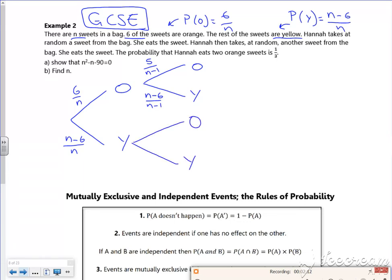So if I took a yellow, it was N minus six. But if I take one of those and eat it, it's now N minus seven. But I've reduced the N down to N minus one. And that's going to be six out of N minus one.